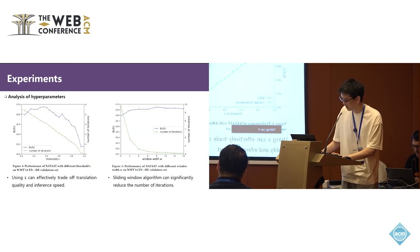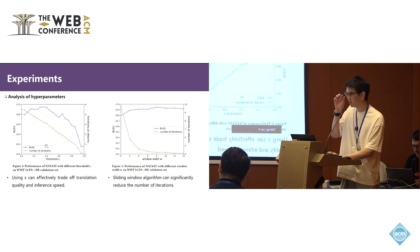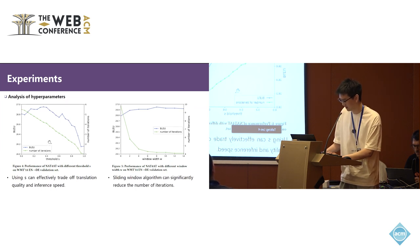We also conduct analysis experiments on hyperparameters. As we can see in Figure 4, using S can effectively trade off translation quality and inference speed. When S equals zero, our method requires the final translation be the same as the AT result, so more iterations are needed. When S increases, the number of iterations decreases. Because of the complementarity between AT and NAT, the translation quality is improved.